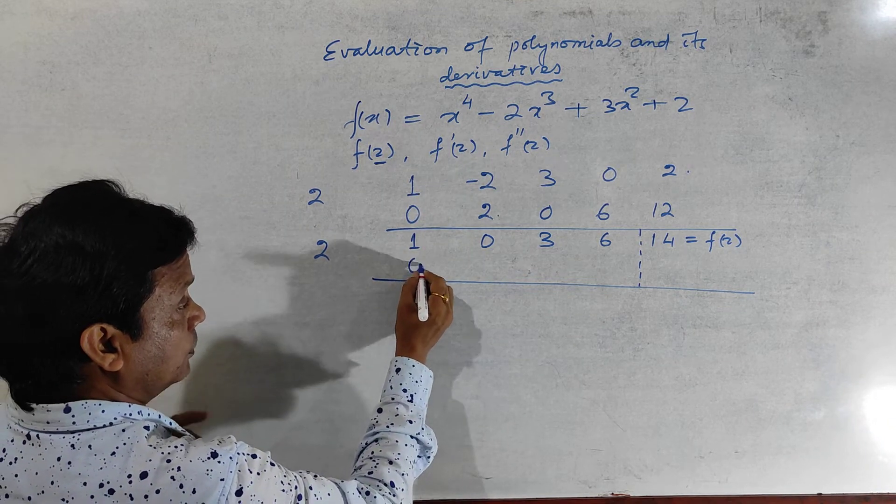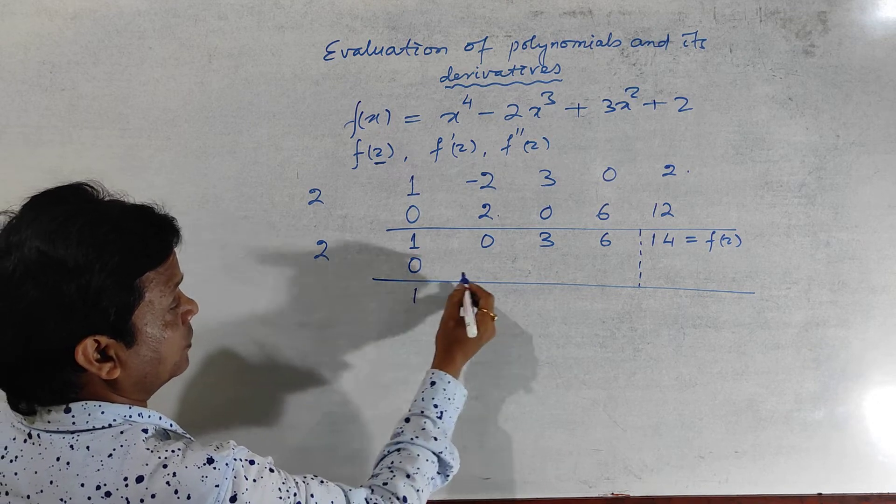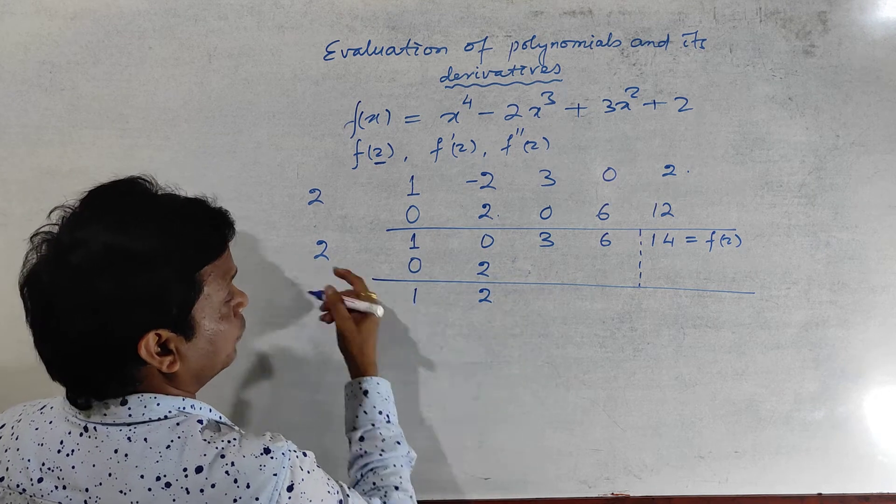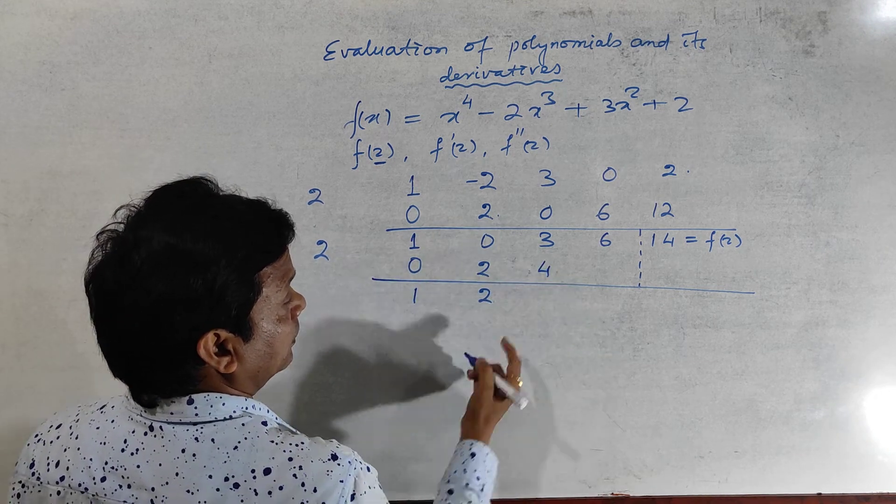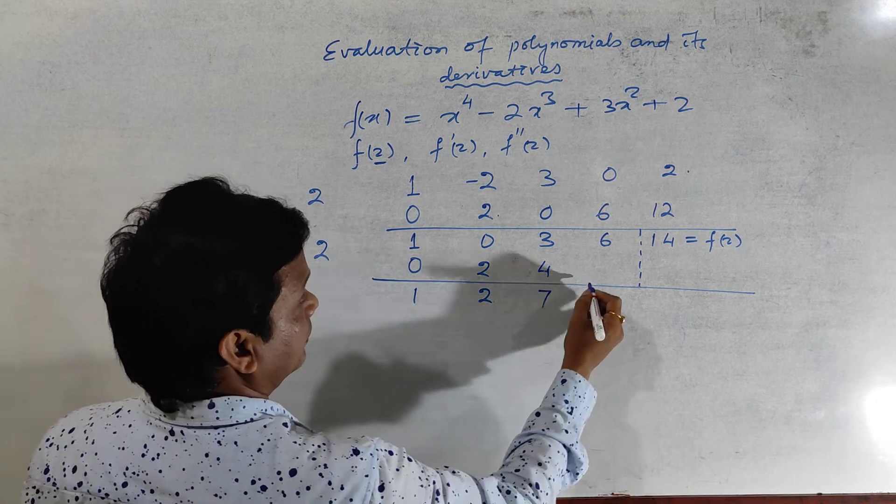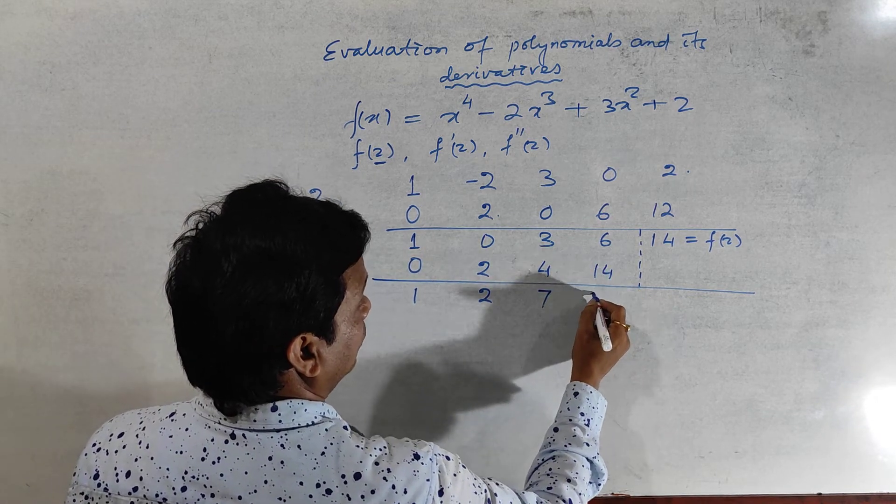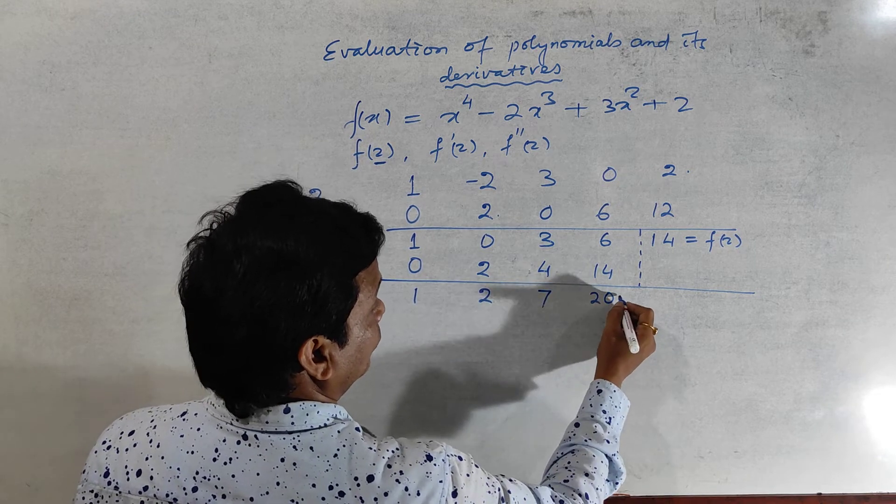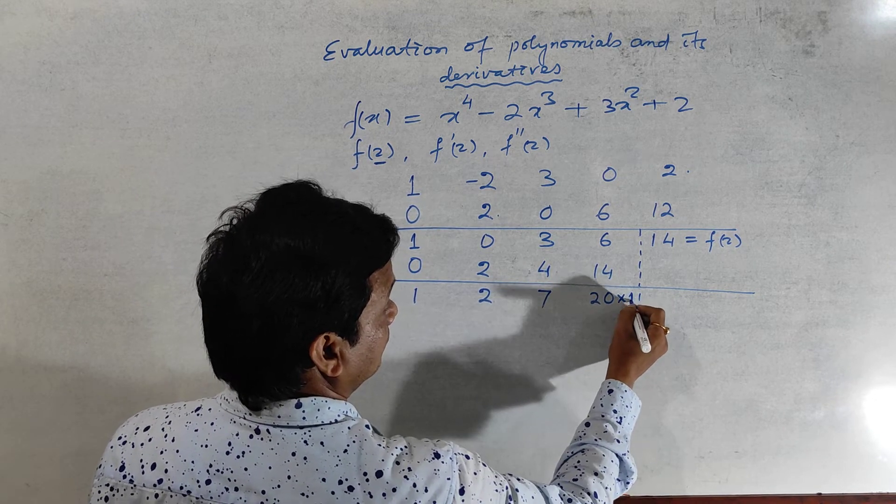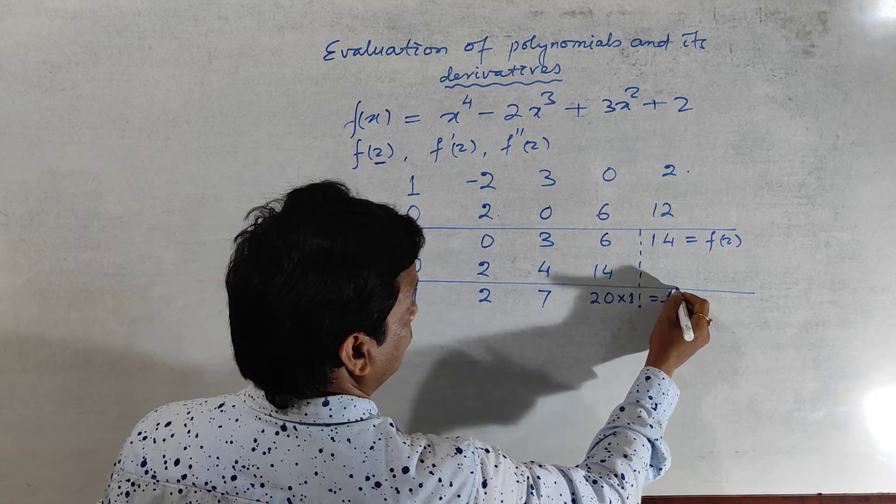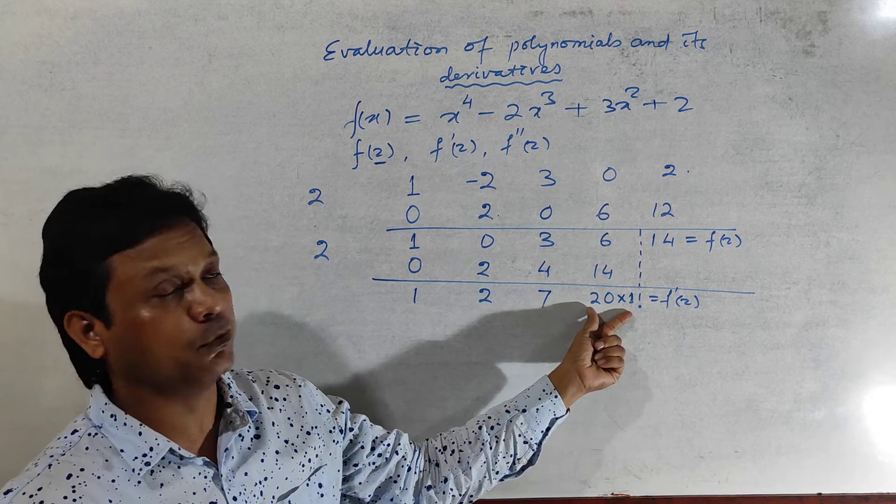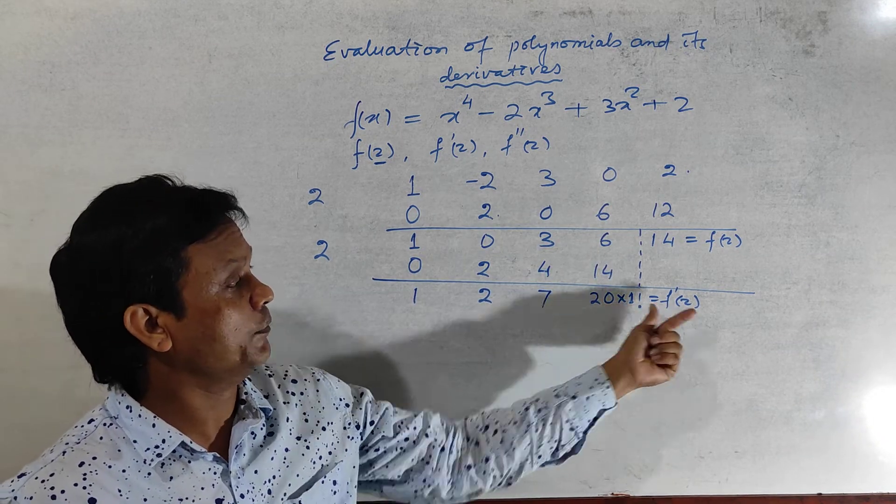So here write 0, 1 plus 0 is 1, 1 into 2 is 2. So 0 plus 2 is 2, 2 into 2 it is 4, write here 4. Then 4 plus 3 it is 7, so 7 into 2 is 14, so write 14 here. It will be 20, so 20 into factorial 1, it is f dash 2. The result should be multiplied by factorial 1. This is f dash 2.